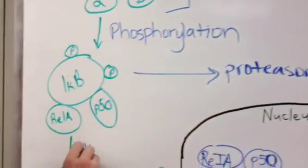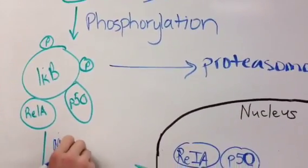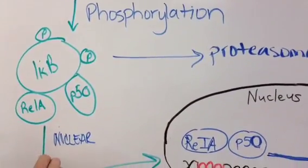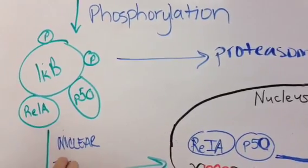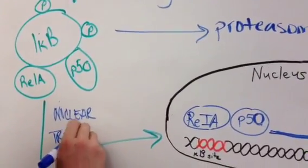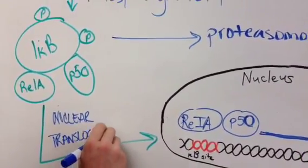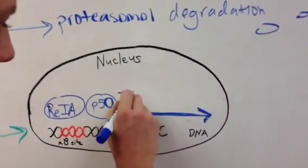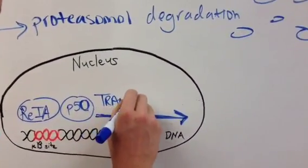NFKB then translocates to the nucleus to activate target genes regulated by KB sites.